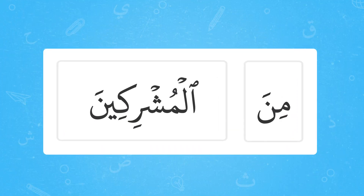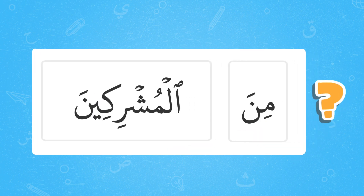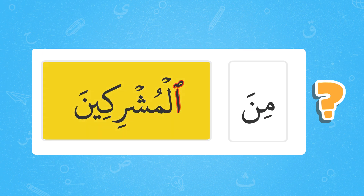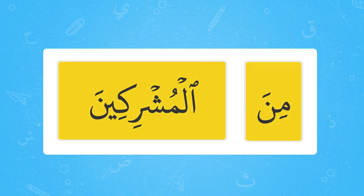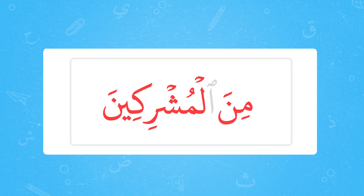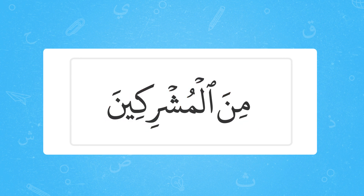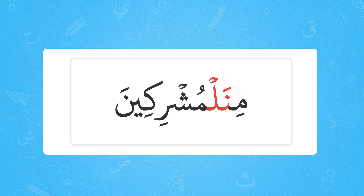Here is another example. Do you see the connector in this verse? Yes, it is at the start of the second word. So we connect the second word to the first one and read it as one. Even though New Moon and Lazy Goose are in two different words, they get connected and read as one syllable.